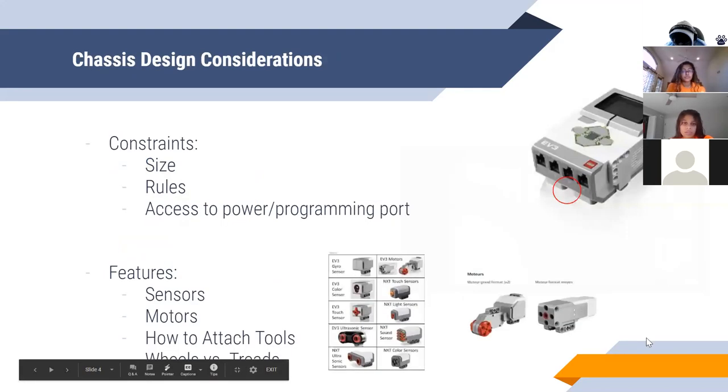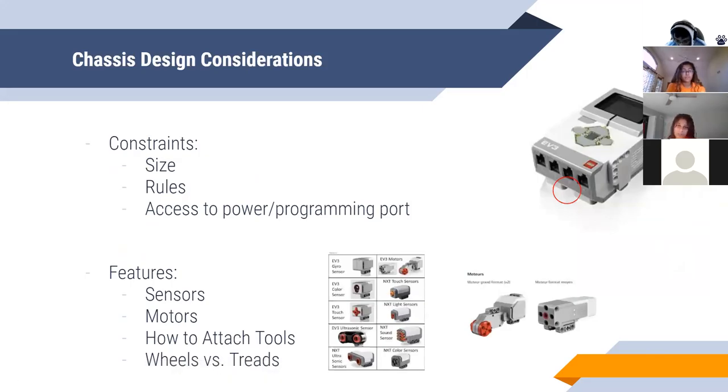In terms of robot design considerations, these are the really important ones on the slide. You definitely want to consider where your robot goes on the map because that will determine its max width. And you also want to know the rules of the game for robot design considerations. And then another overlooked thing is having access to your power port, which you can see in the red circle on the picture. Because if you can't charge your robot, that's just not going to work.